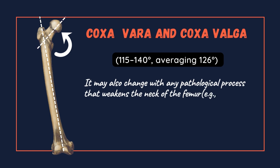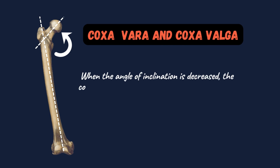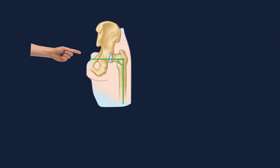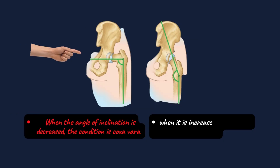The angle may also change with any pathological process that weakens the neck of the femur, such as rickets. When the angle of inclination is decreased, the condition is coxa vara; when it is increased, it is coxa valga. This is the diagrammatic representation of coxa vara and coxa valga.